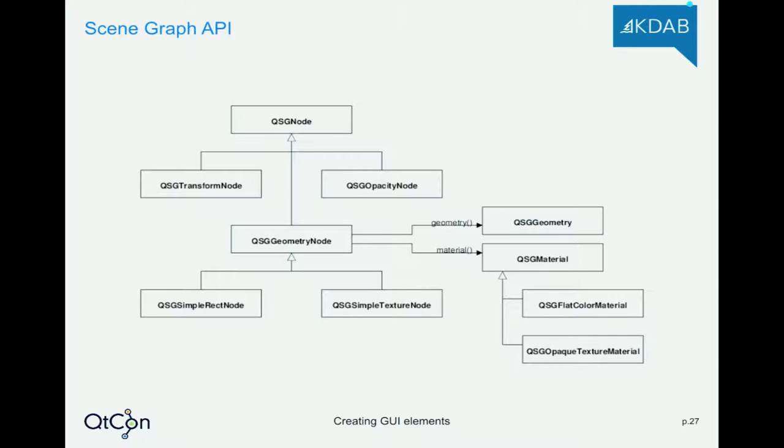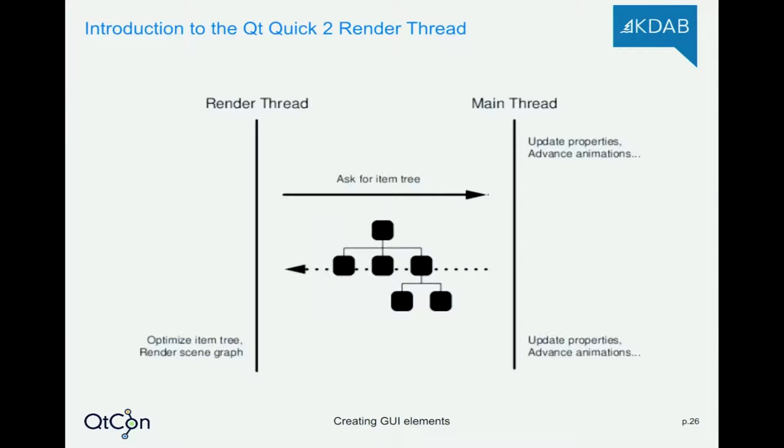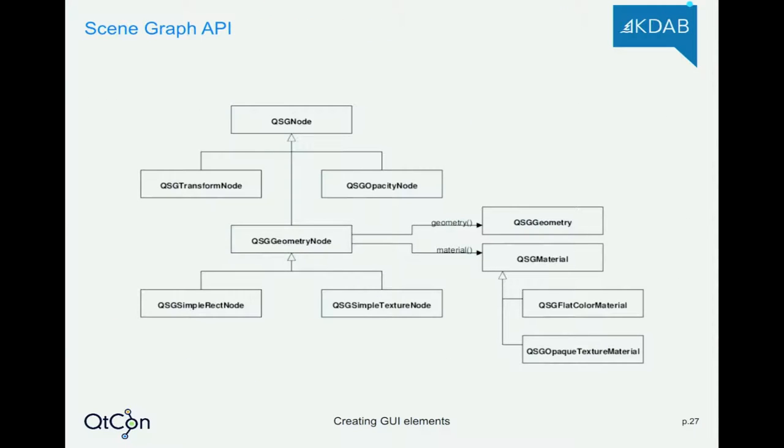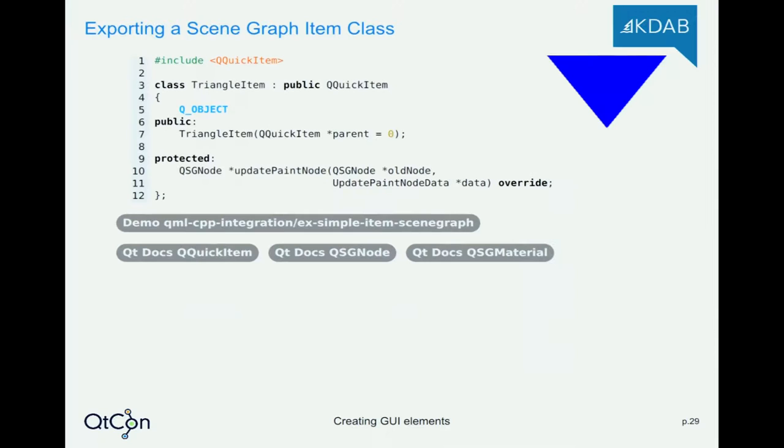How do we do that? Exporting a scene graph item class. Just a bit of an intro to the Qt Quick render thread. Usually there are two threads in Qt Quick: a render thread and a main thread. The render thread asks the main thread for the item tree what is written in the QML file.